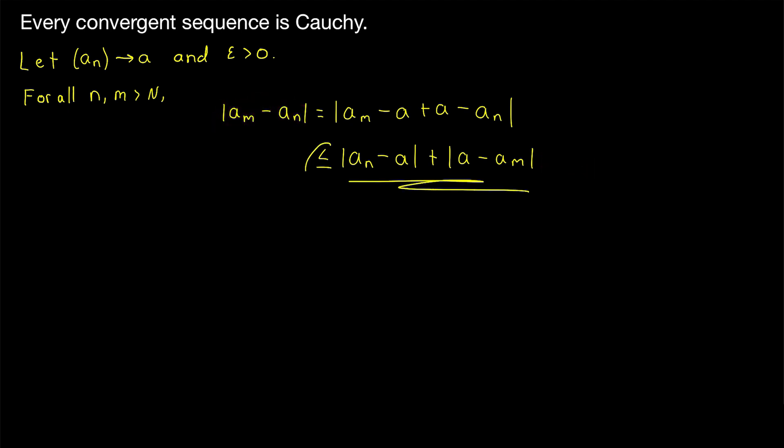This expression might be a little bit bigger, but it's pretty nice because we have a bunch of control over the value of this expression. Both of these expressions represent distances between terms of the sequence and the limit. Thus, since we assumed that An converges to A, we can make both of these as small as we want.